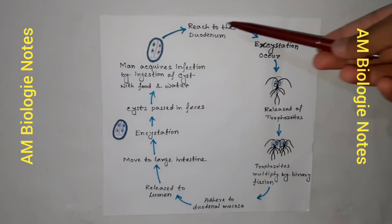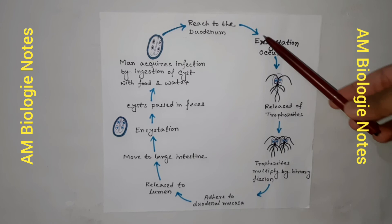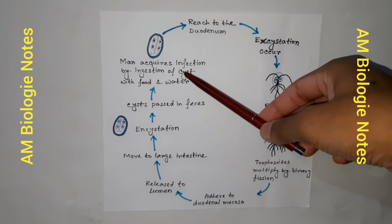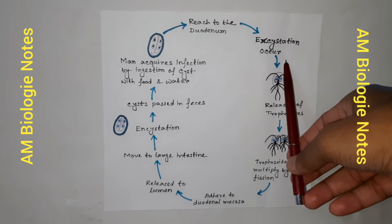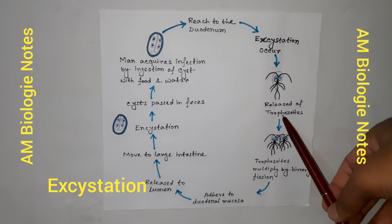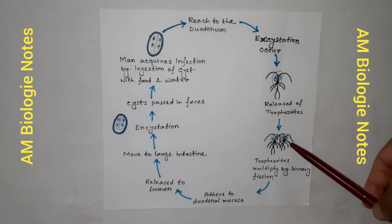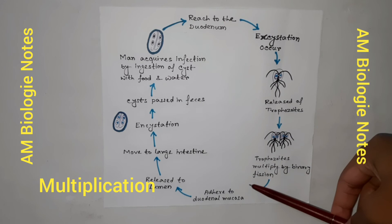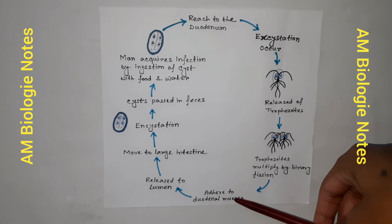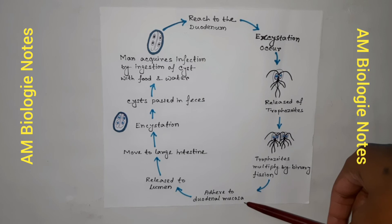This is a diagram representing the life cycle of Giardia. After ingestion of contaminated food or water with cysts of Giardia, within half an hour each cyst hatches out into two trophozoites in the duodenum. This process is known as excystation. The trophozoites then multiply successively by binary fission and colonize in the duodenum — this phase is called multiplication. The trophozoites then adhere to the duodenal mucosa and upper part of the jejunum by the bilobed adhesive sucking disc, and feed by pinocytosis.